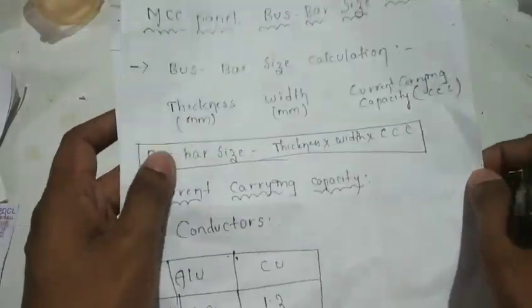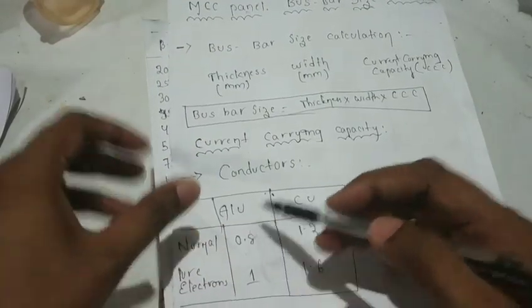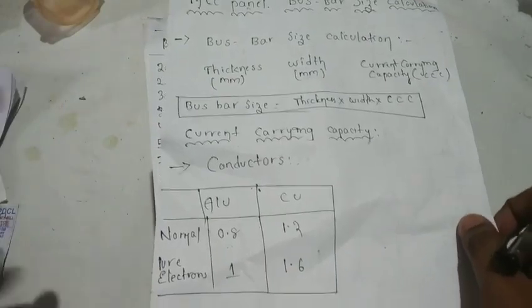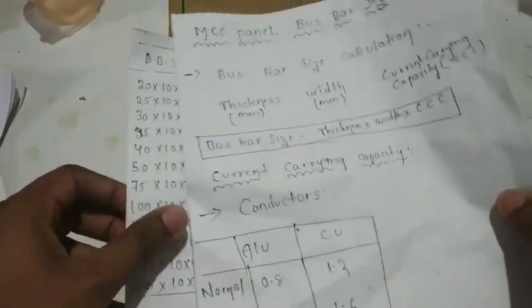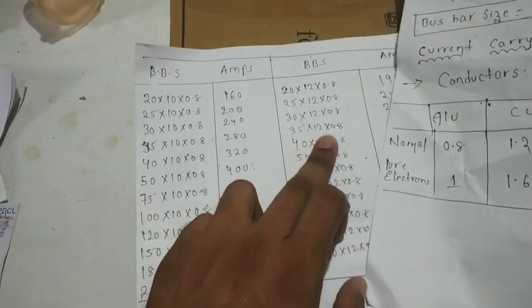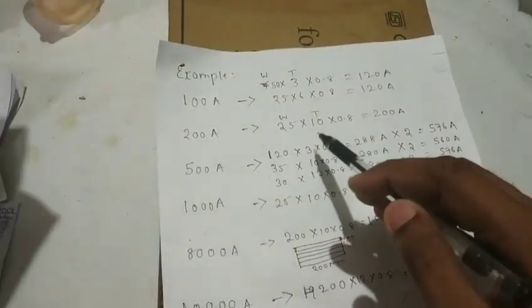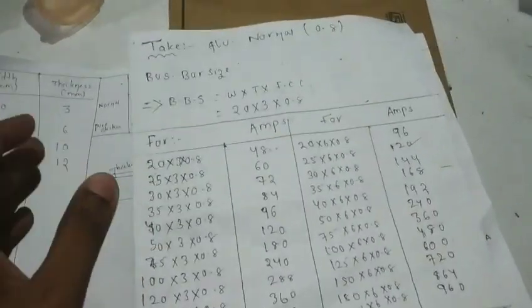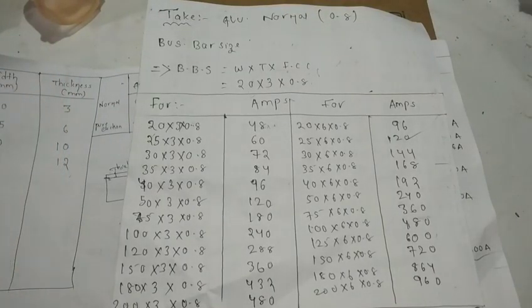So you can calculate the MCC panel bus bar. Aluminium bus bar uses a factor of 0.8. The formula is: multiply the thickness by the width by the current carrying capacity factor to get the bus bar current rating. Width times thickness times the current carrying factor gives the full load current amps. We will calculate the bus bar this way. If you like this video, please like, share, and subscribe.